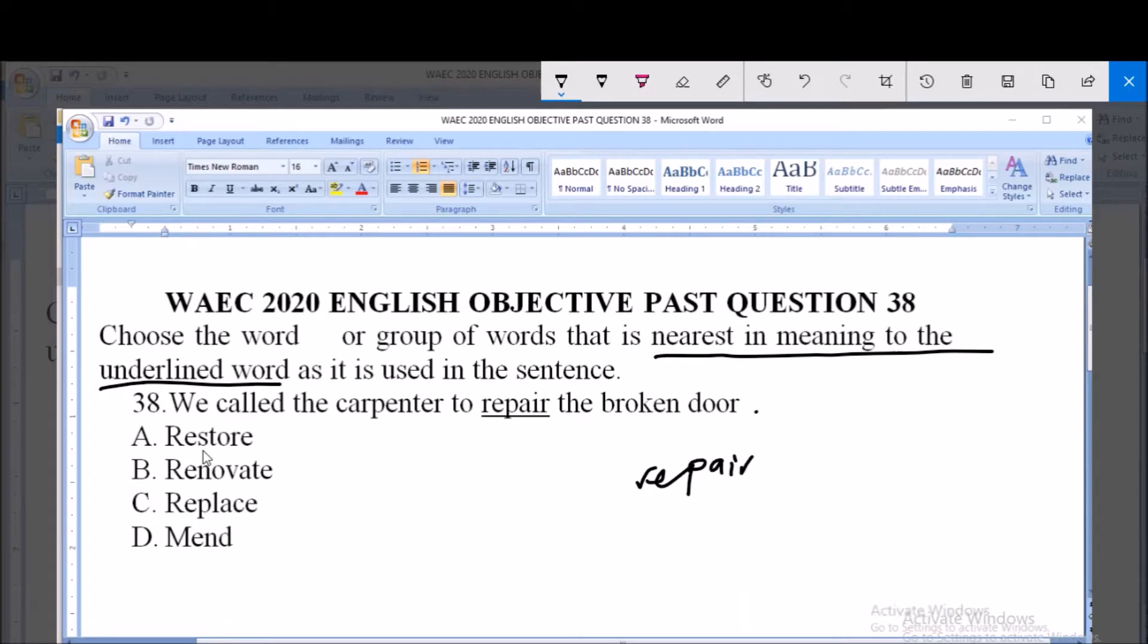The sentence: 'We called the carpenter to repair the broken door.' Option A says restore, B says renovate, C says replace, D says mend. And we are looking for the word that can actually replace repair and still give us the exact meaning in this sentence.